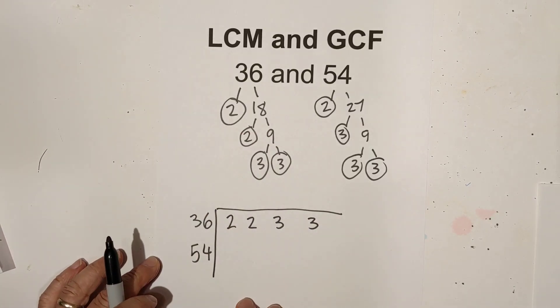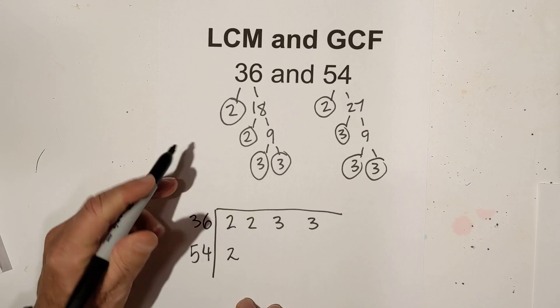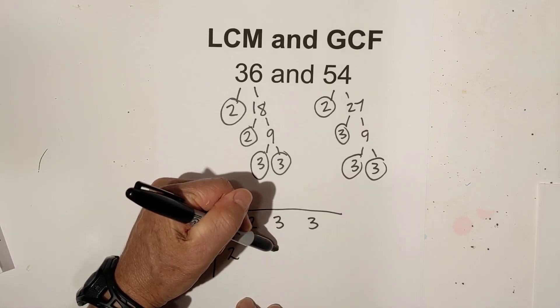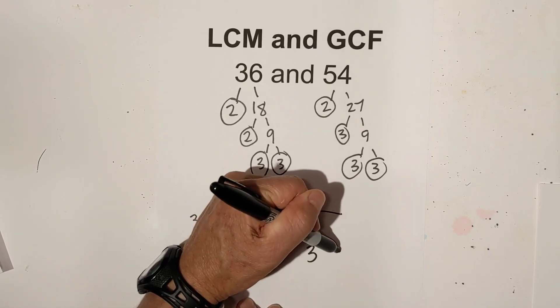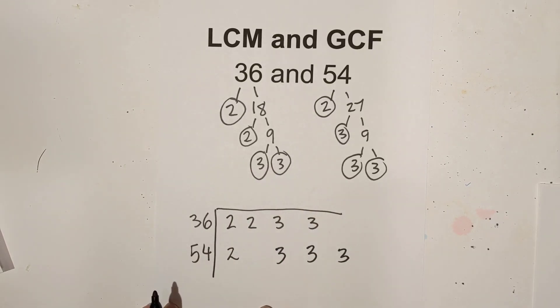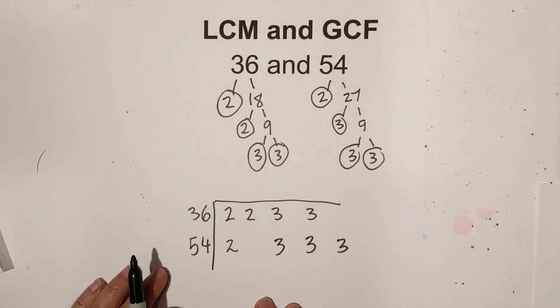For 54, I'm going to write 2. I don't have another 2, so I'll skip it. I have 3, 3, and 3. Notice I now have columns.